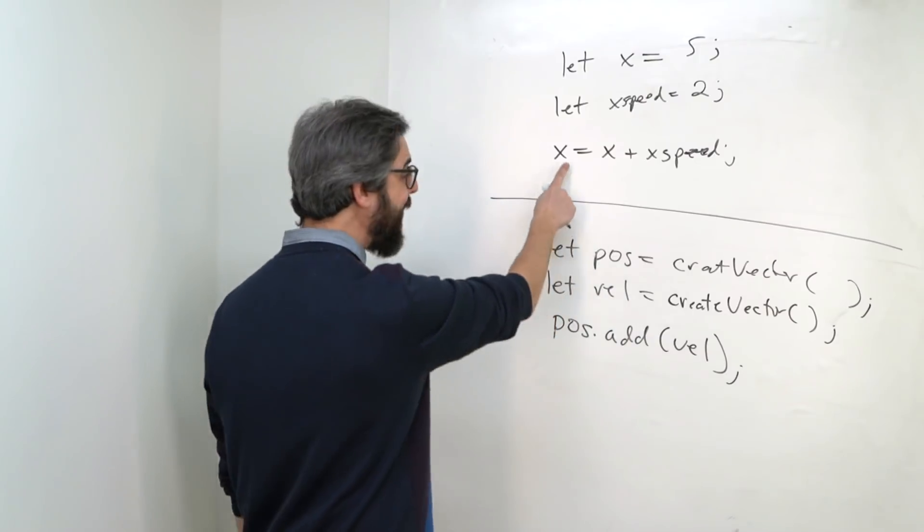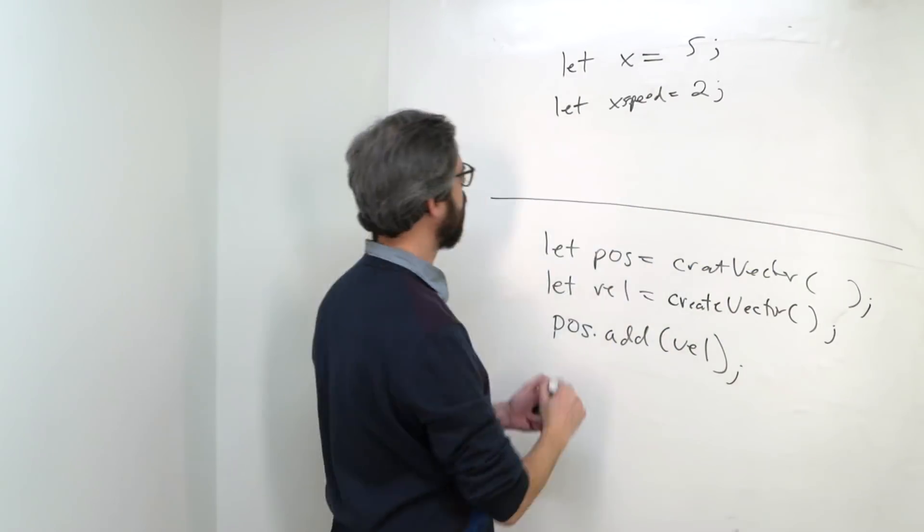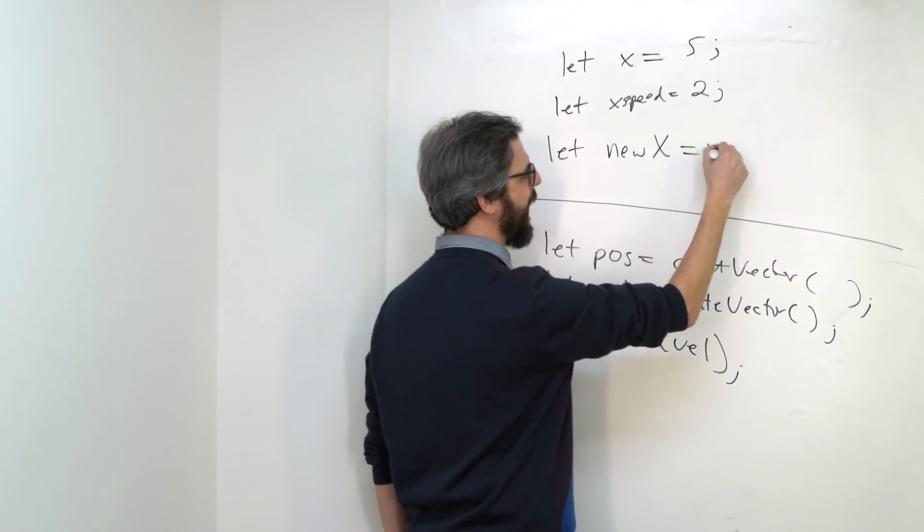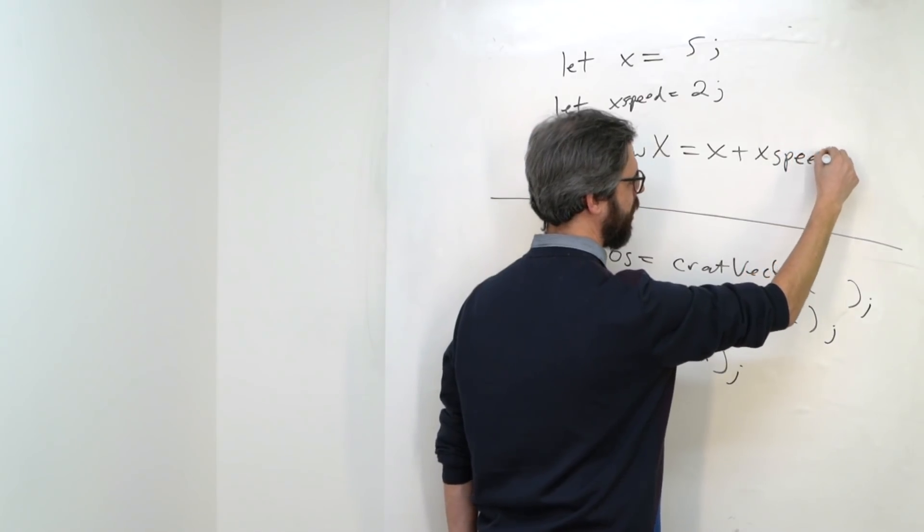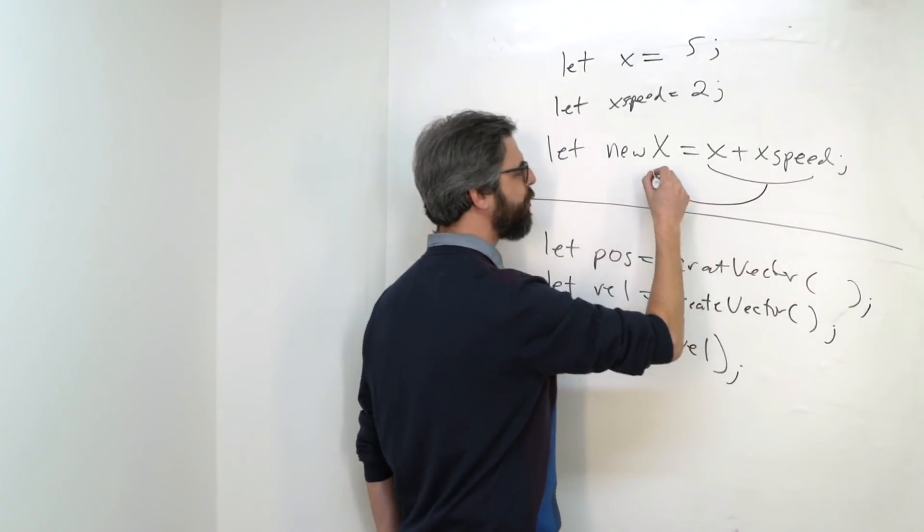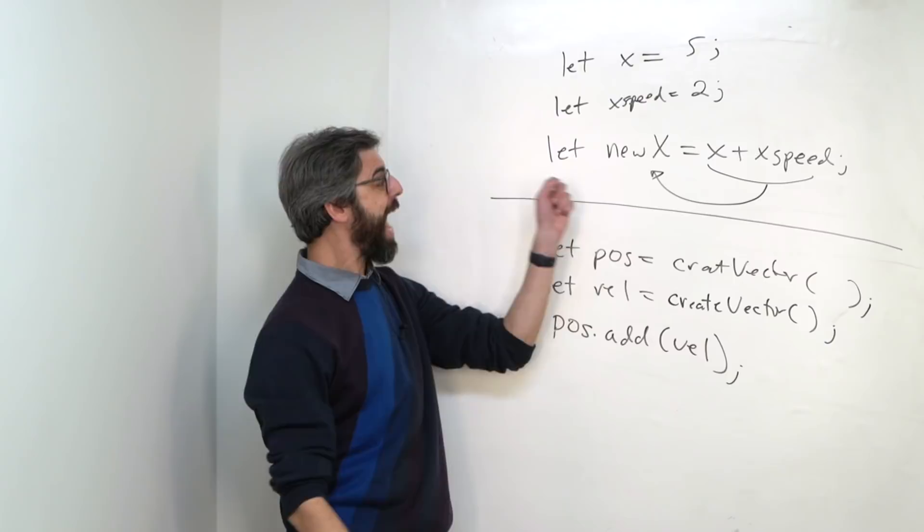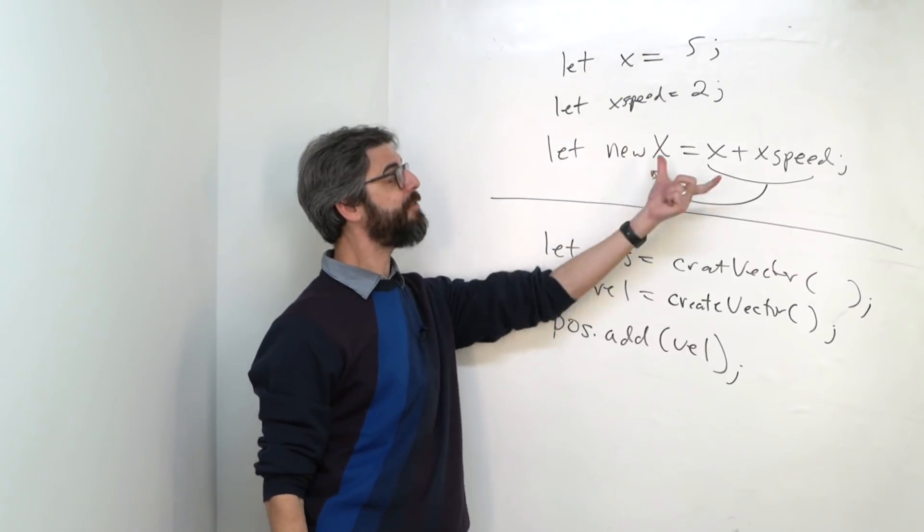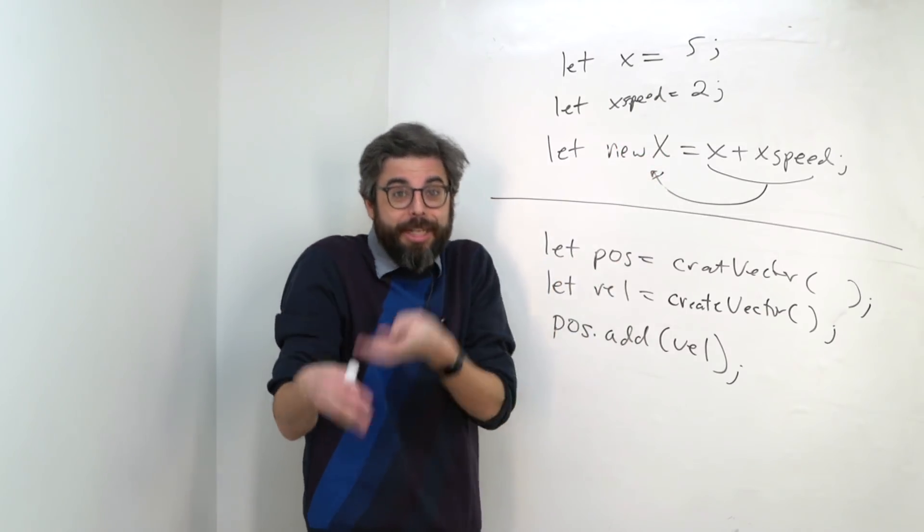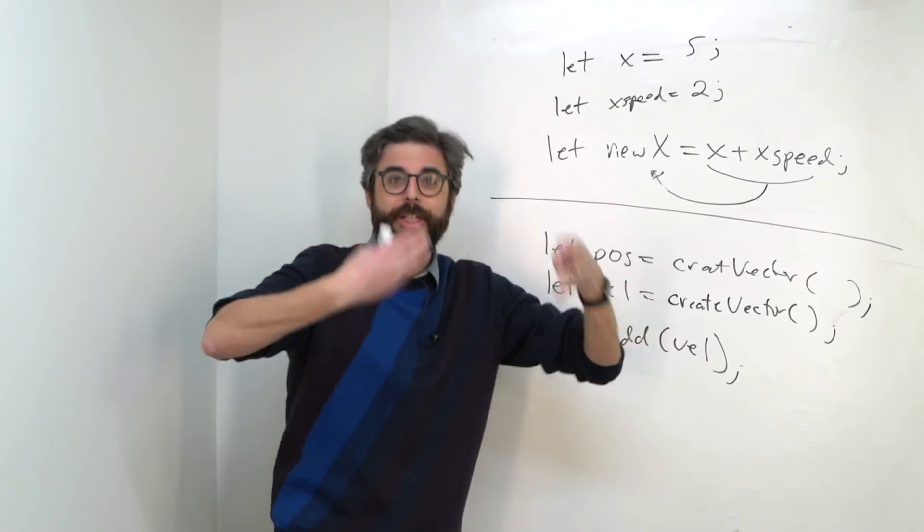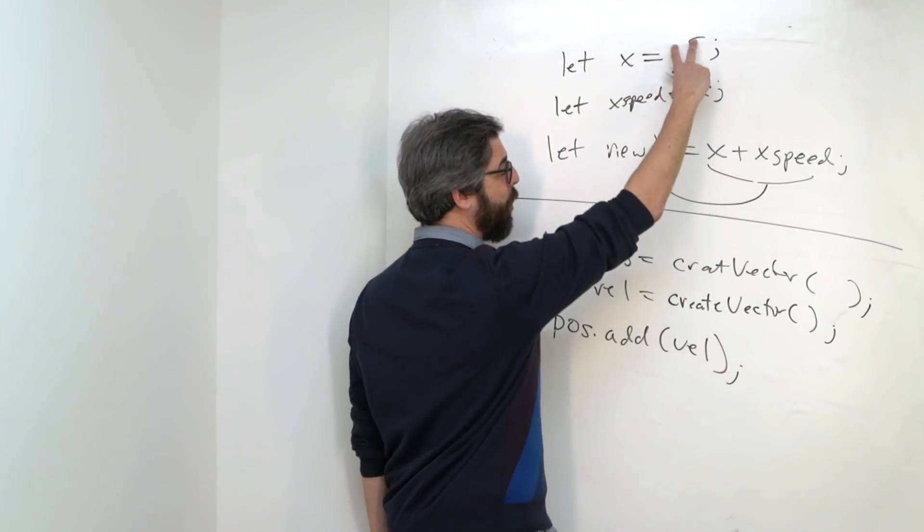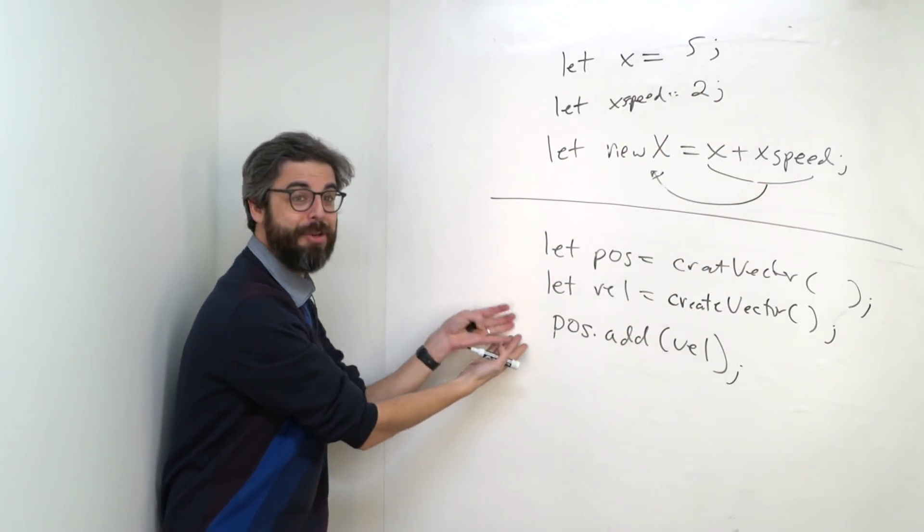However, what if, instead of doing it this way, I wanted to say, let new x equals x plus xSpeed. What if what I wanted to do was take the result of this operation and store it in another variable? So x hasn't changed. After I run this line of code, x is still 5. I have the number 7 in this particular variable, new x. Now, in most examples, I don't want to do that. I want x to change and keep saving the new value into itself incrementally. But there are a lot of times where I want to do an operation, not mess with those two variables, and store it in a new result.